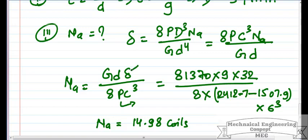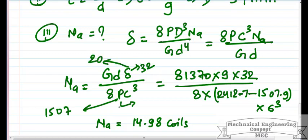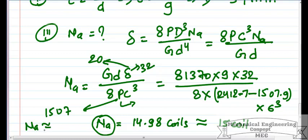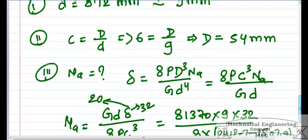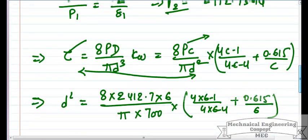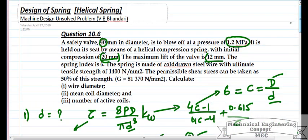If the deflection is 32 mm and load is 2412.7 N, NA ≈ 14.98, which can be approximated as 15 coils. Alternatively, if P = 1507.96 N and δ = 20 mm, NA reduces to approximately 6 coils. You need to justify whichever condition you choose and understand the concept. If you have any doubts, comment below. Don't forget to subscribe to my channel. Thank you, have a good day.